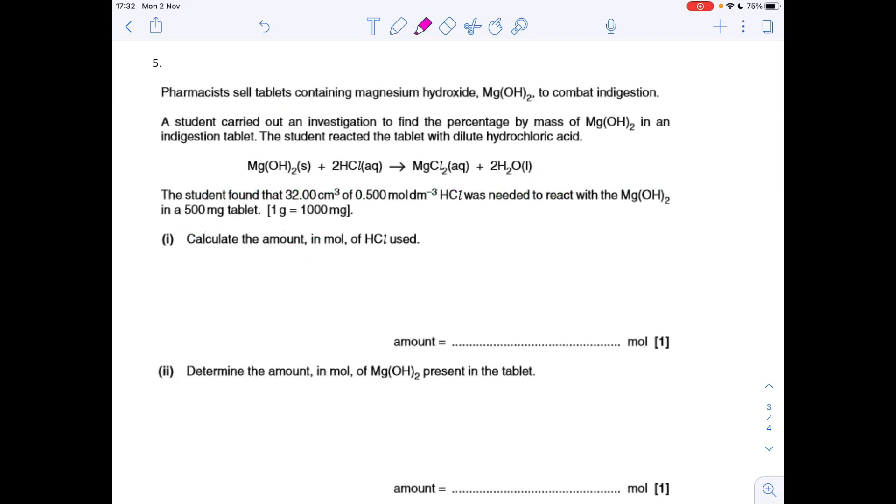Question five: the first thing I've got to do is work out the moles of HCl used. The concentration was 0.5, the volume was 32 cm cubed. Moles equals concentration times volume. That's 0.5 times 32 centimeters cubed, in decimeters cubed 0.032. That comes out at 1.60 times 10 to the minus 2.